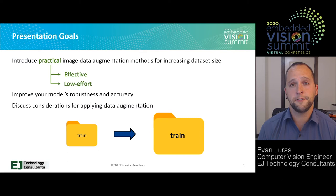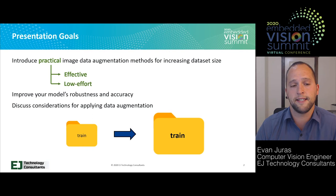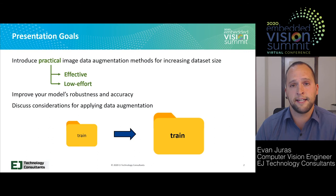My goals for this presentation are to introduce practical image data augmentation methods that you can use to increase the size of your dataset. By practical, I mean effective and low effort. Effective means you'll be able to use these methods to see concrete improvement in the performance of your object detection models, and low effort means you'll only need to spend a minimal amount of time implementing them. I'm hoping you'll walk away with some examples, ideas, and tools to improve your own detection models' robustness and accuracy. I'll also discuss some considerations you have to think about when applying data augmentation.